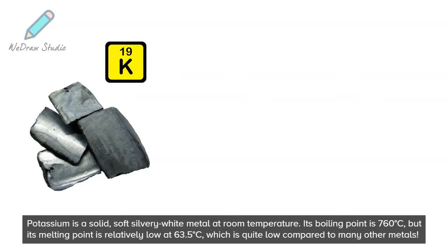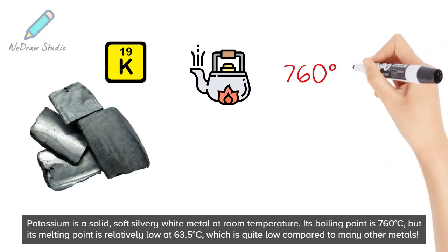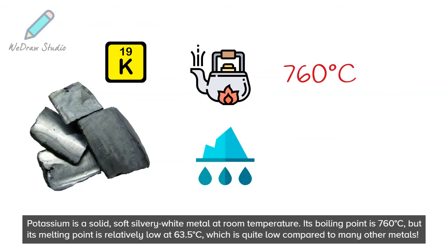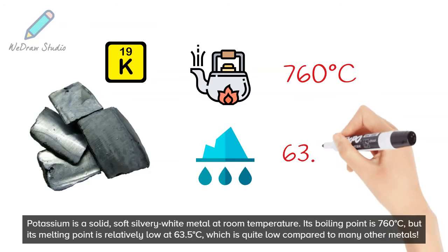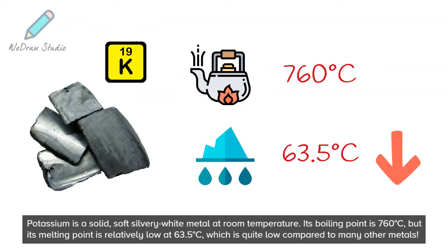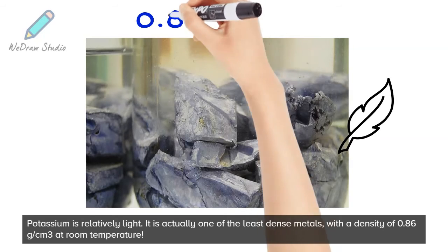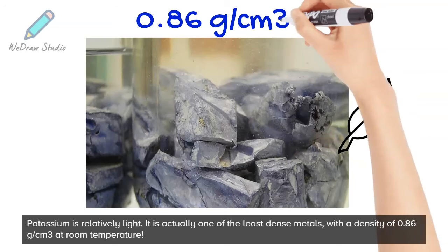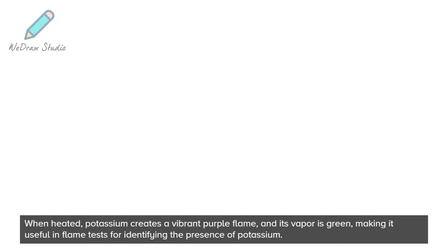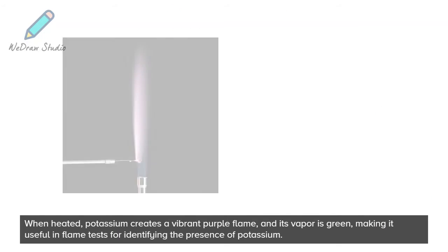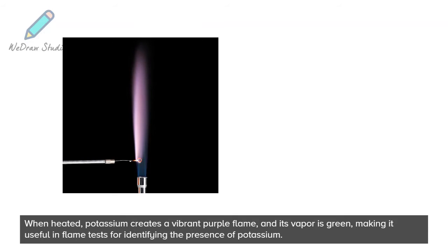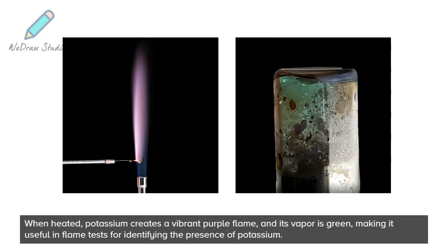Potassium is a solid, soft, silvery-white metal at room temperature. Its boiling point is 760 degrees Celsius, but its melting point is relatively low at 63.5 degrees Celsius, which is quite low compared to many other metals. Potassium is also one of the least dense metals, with a density of 0.86 grams per cubic centimeter. When heated, potassium creates a vibrant purple flame and its vapor is green, making it useful in flame tests for identifying the presence of potassium.